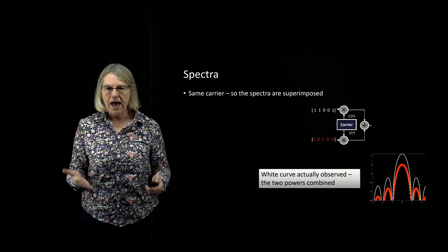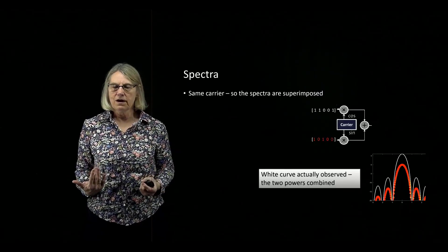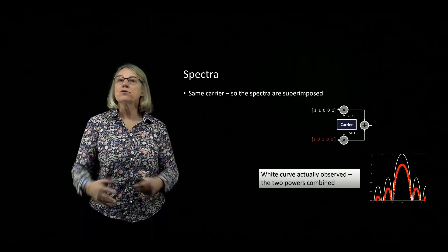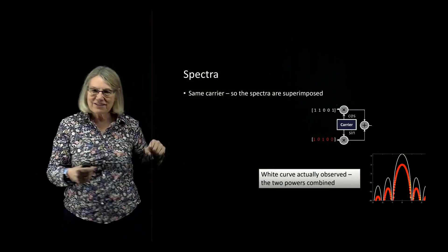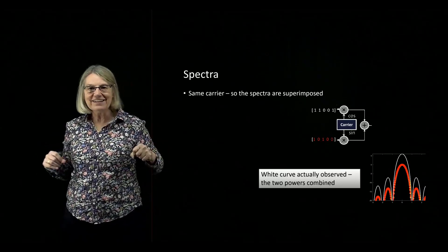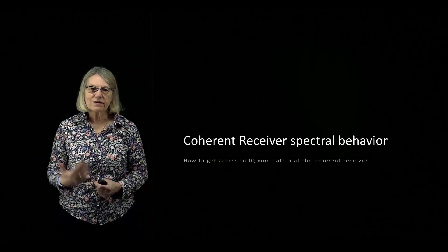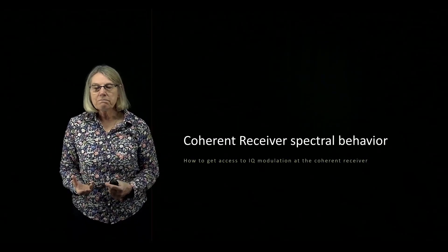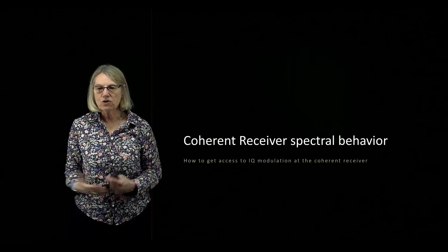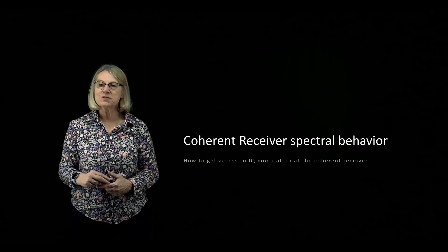Given that this is what's happening at the transmitter, how is it that at the receiver I can keep things straight? How can I take this white curve — this power spectral density — and recover the yellow and the red and separate them, even though they're on top of each other in the frequency domain? We've seen how a coherent transmitter manipulates the spectrum to transmit QPSK or QAM data, and now we'll look at the coherent receiver and its spectral behavior.